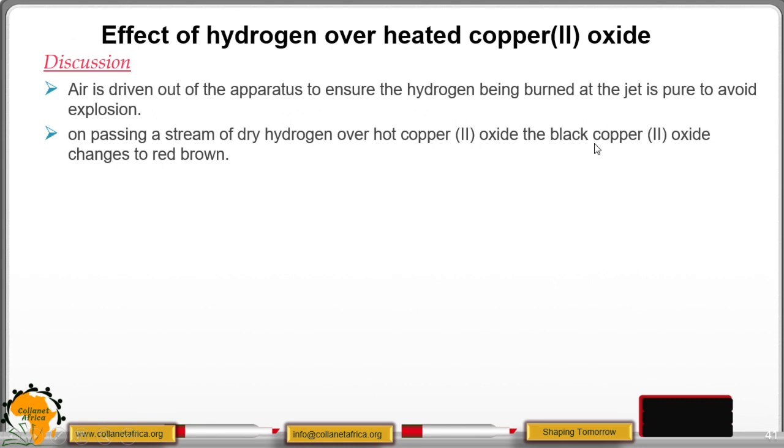On passing a stream of dry hydrogen gas over hot copper oxide, the black copper oxide changes into red brown. At the same time, a colorless liquid condenses and collects at the cooler parts of the test tube.